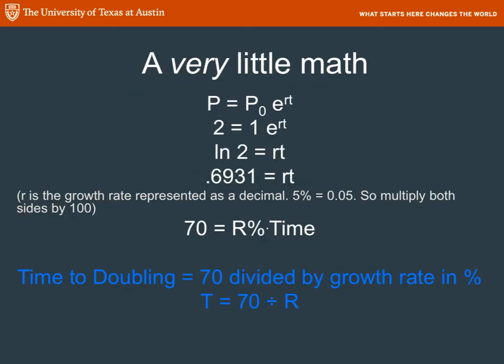Here's a little math to determine the amount of time it takes for something to double. Why doubling? It turns out that things that grow at a steady rate — population, money if you have it in interest — can be talked about in terms of how quickly they double. And it's a very useful way for humans to think about it, because we understand doubling. Doubling makes sense.